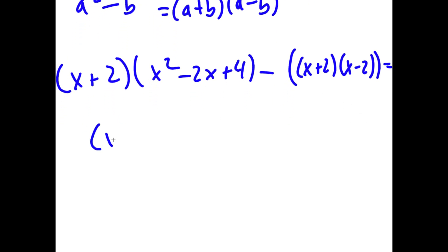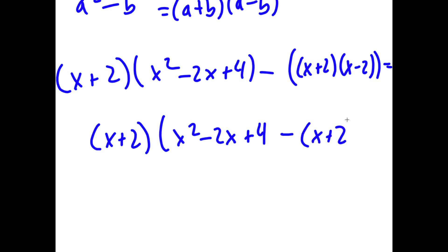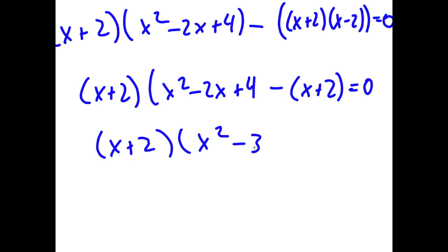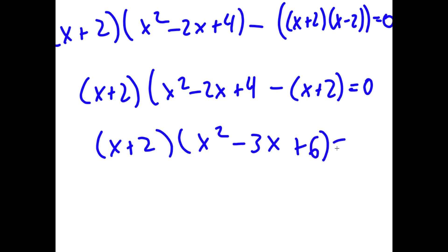From here I can factor out (x + 2), so I get (x + 2) times (x squared minus 2x + 4 minus x + 2) is equal to 0. Simplifying inside the parentheses, I get (x + 2)(x squared minus 3x + 6) is equal to 0.